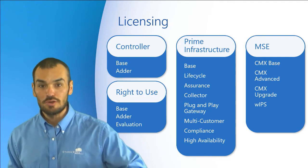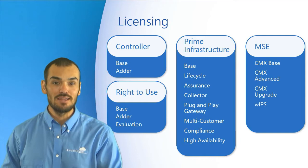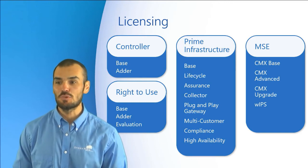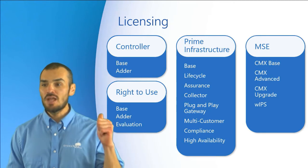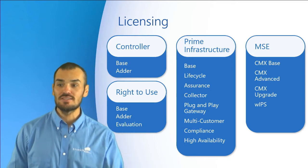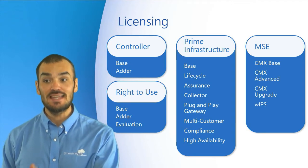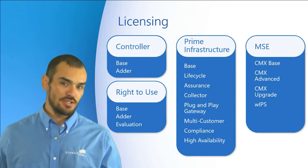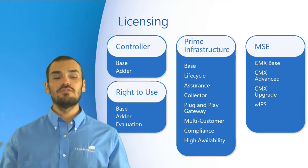Basically, you can use this and then purchase the number of licenses you need at that point in time. For example, if you plug in your controller, fire it up, and it recognizes 50 access points, you can go ahead and buy the licenses for those rather than buying them upfront. Other license types within this category include: permanent or base, which is programmed into the controller during manufacturing; adder, which is activated after accepting the EULA; and evaluation, which is a demo or trial good for a period of 90 days.